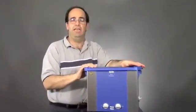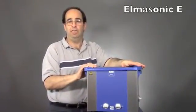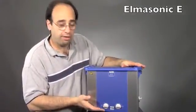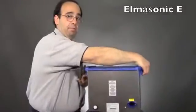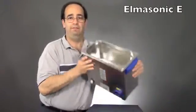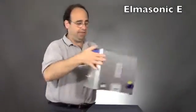Let's start with the Elma Sonic E line, your basic unit. It works for almost every application. You've got dials on the front, a drain on the back, the lid, and of course the stainless steel tank on the inside.